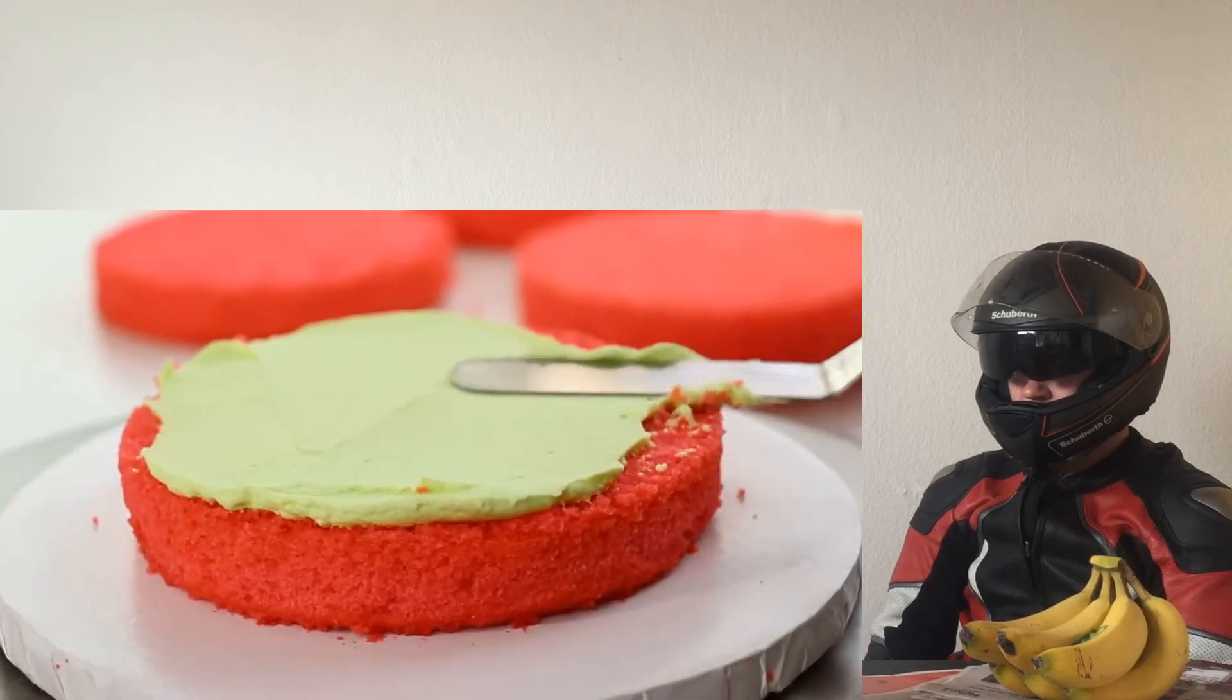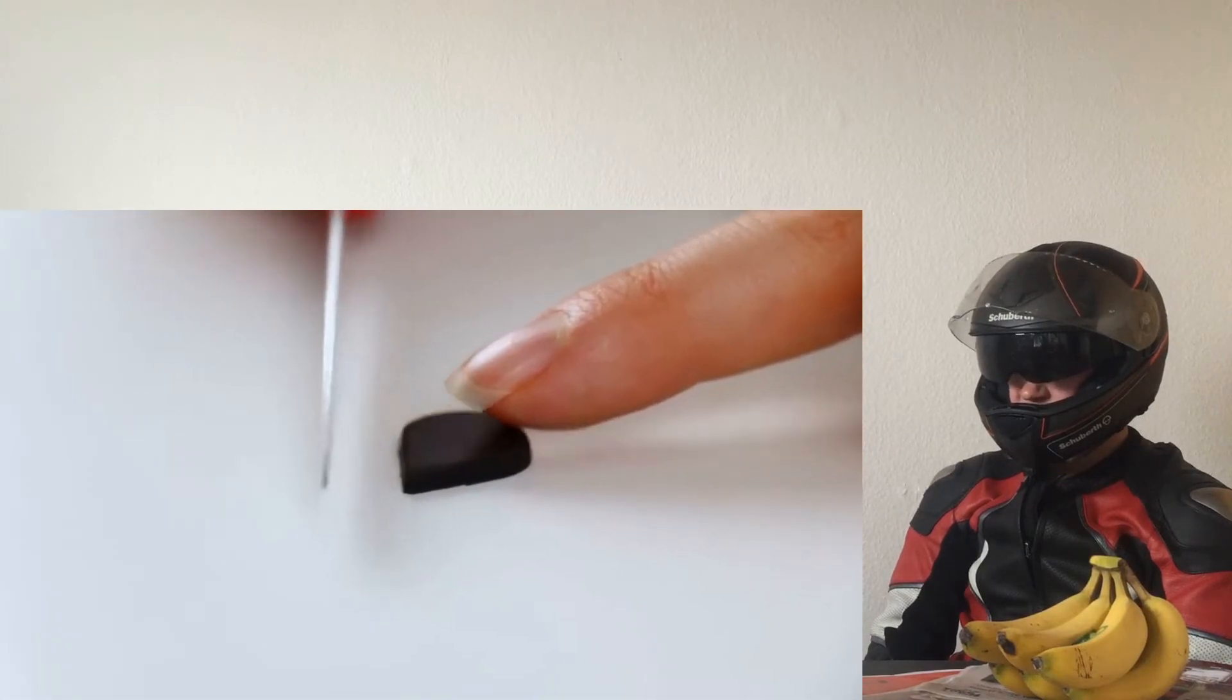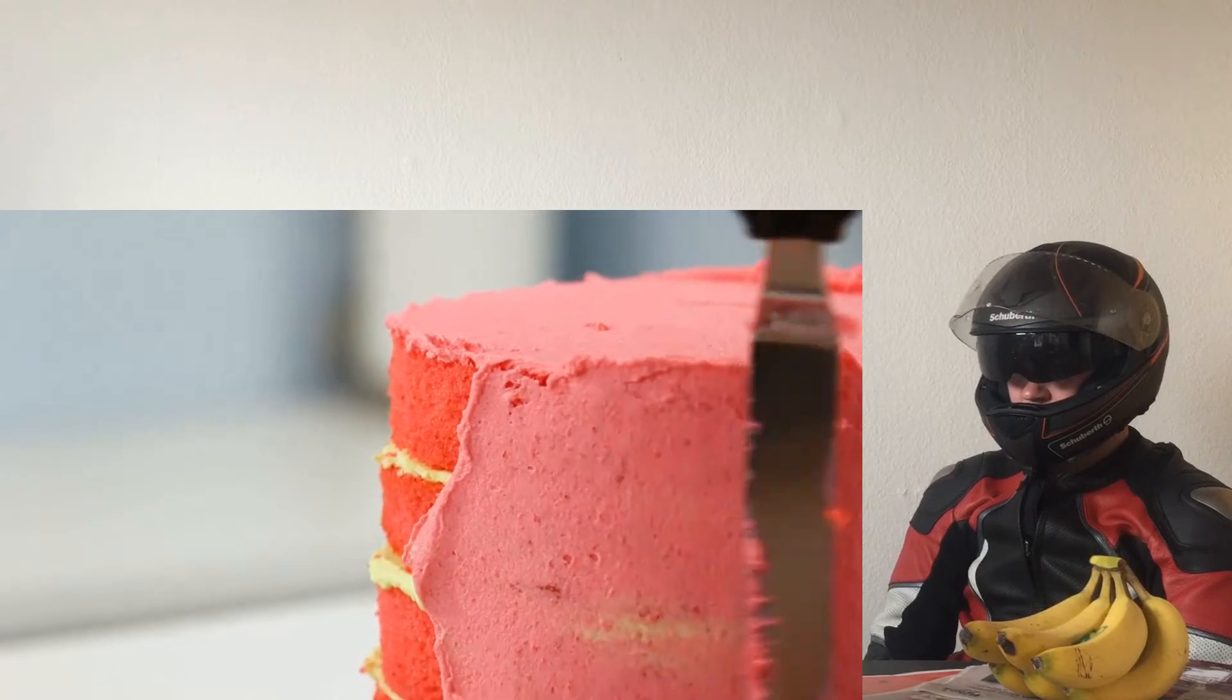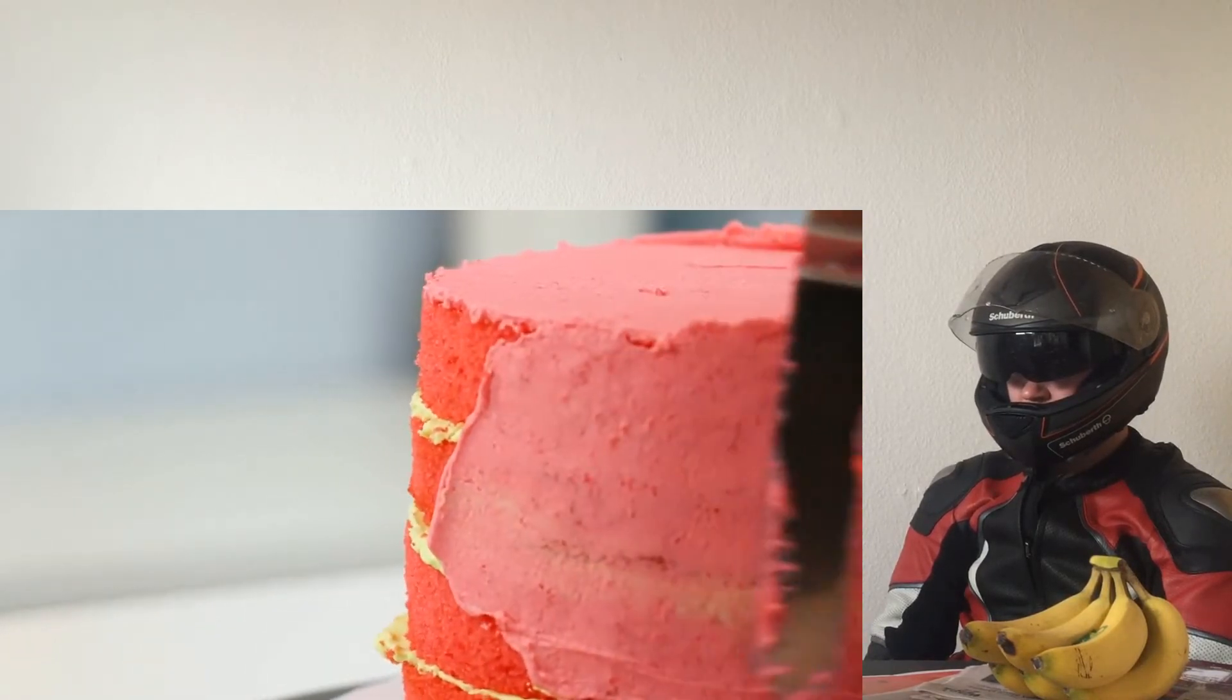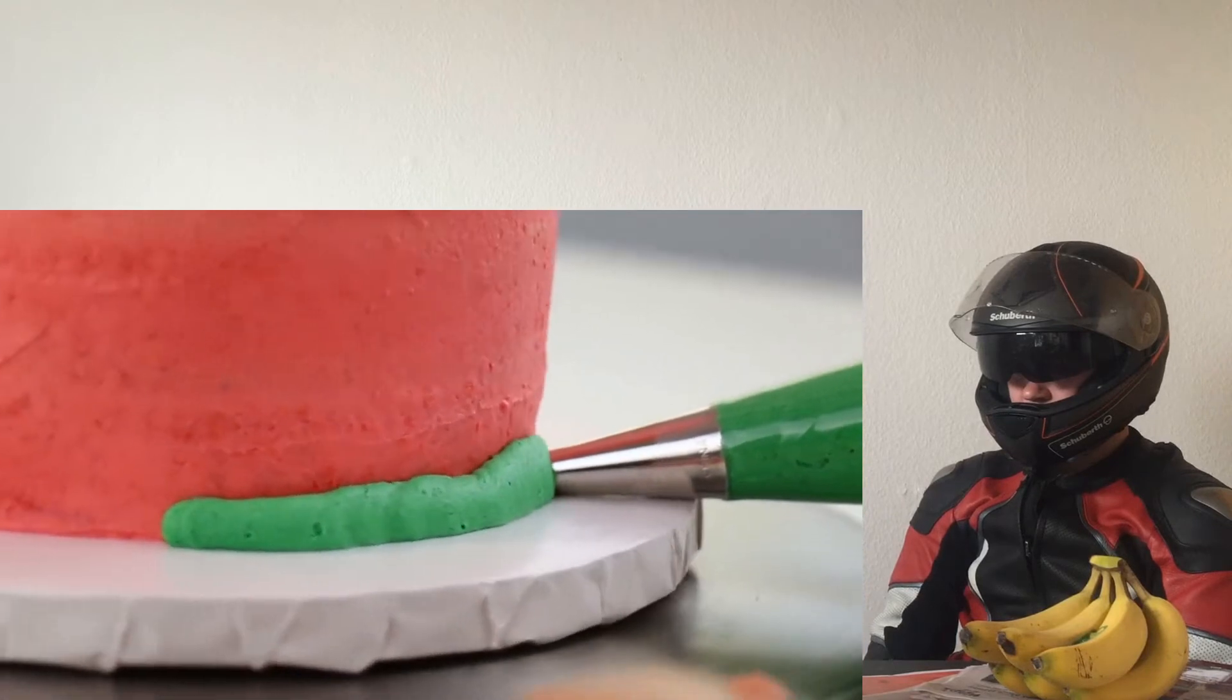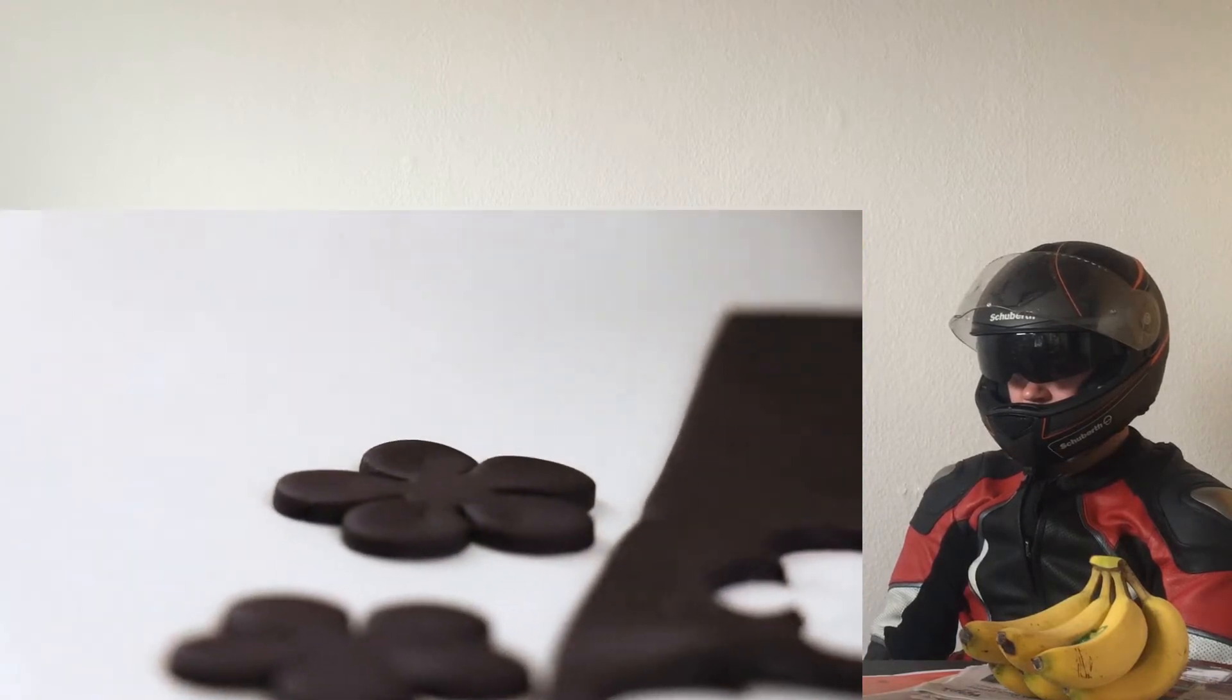I used three different colors of buttercream for this cake to make it look like a watermelon on the inside. For the crust I'm using a darker green. I'm just gonna pipe that going around the bottom.